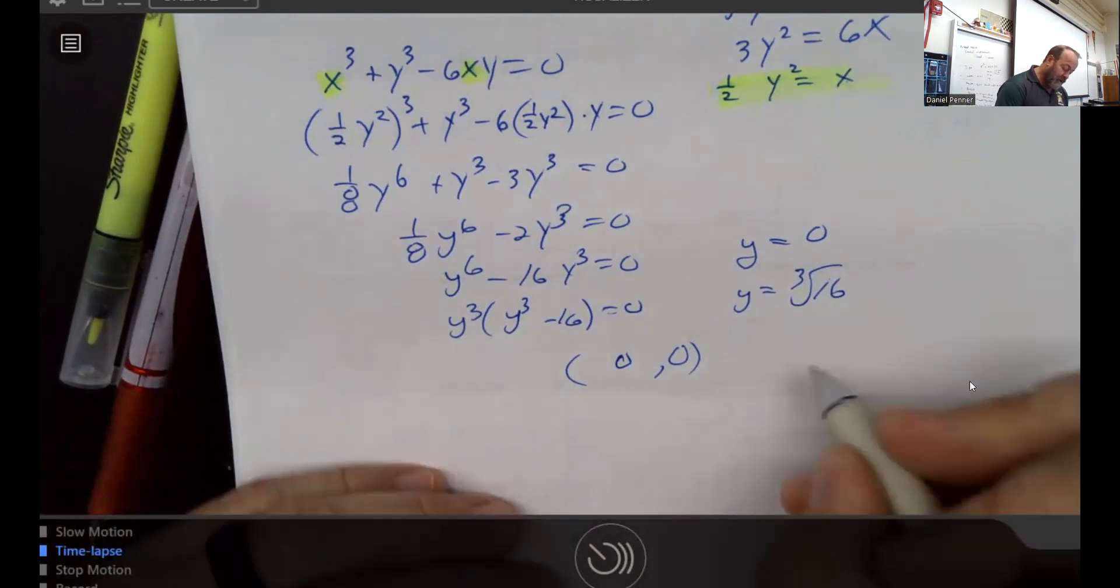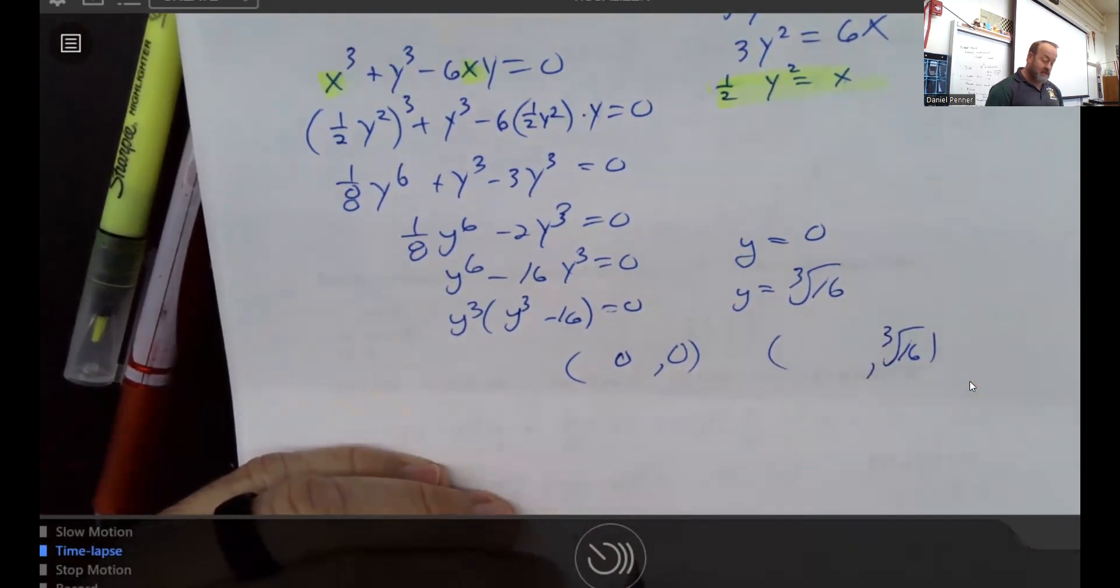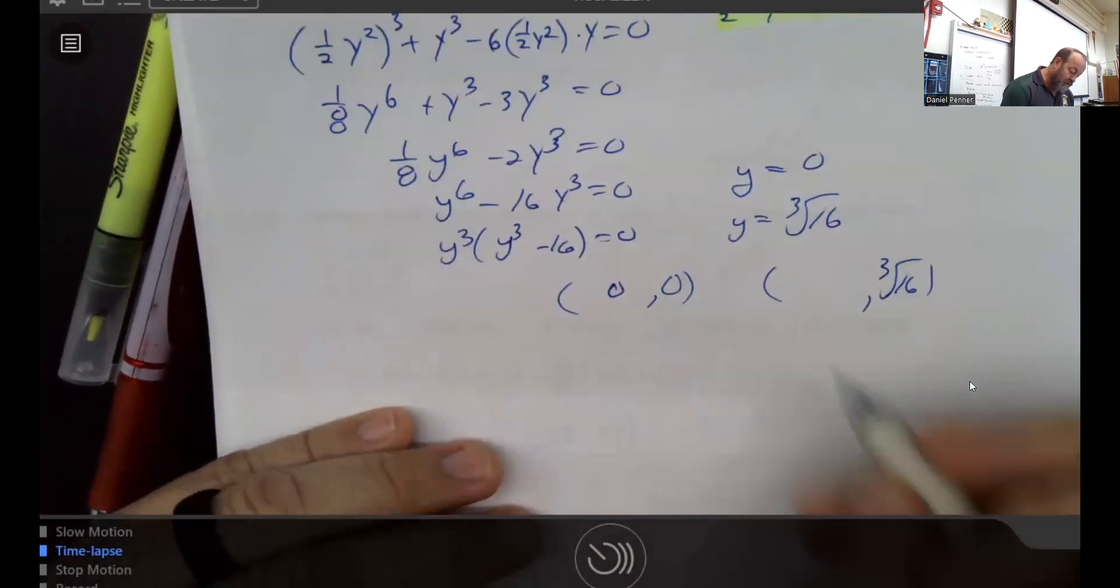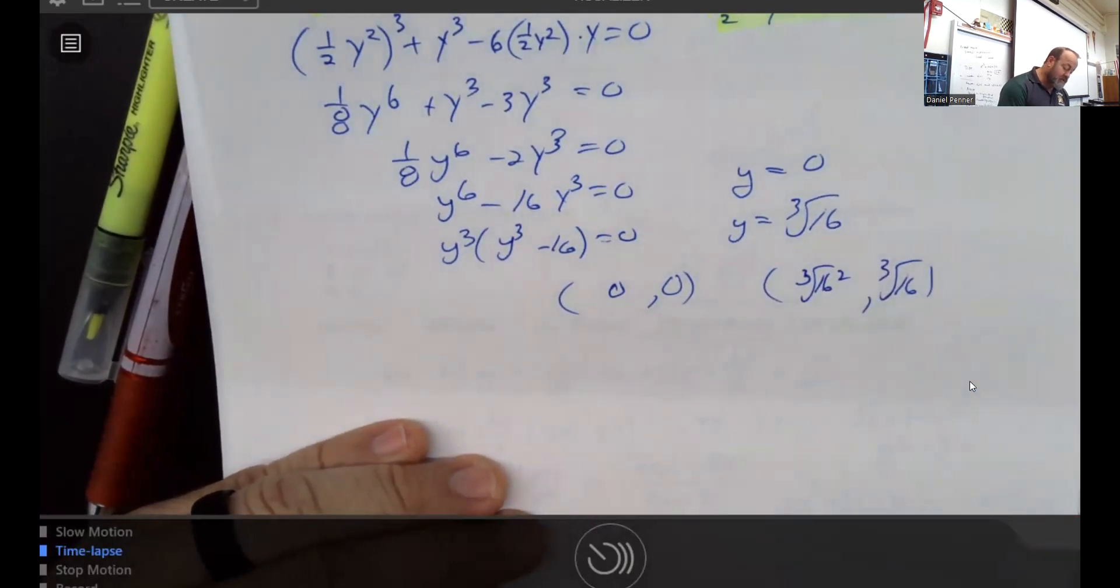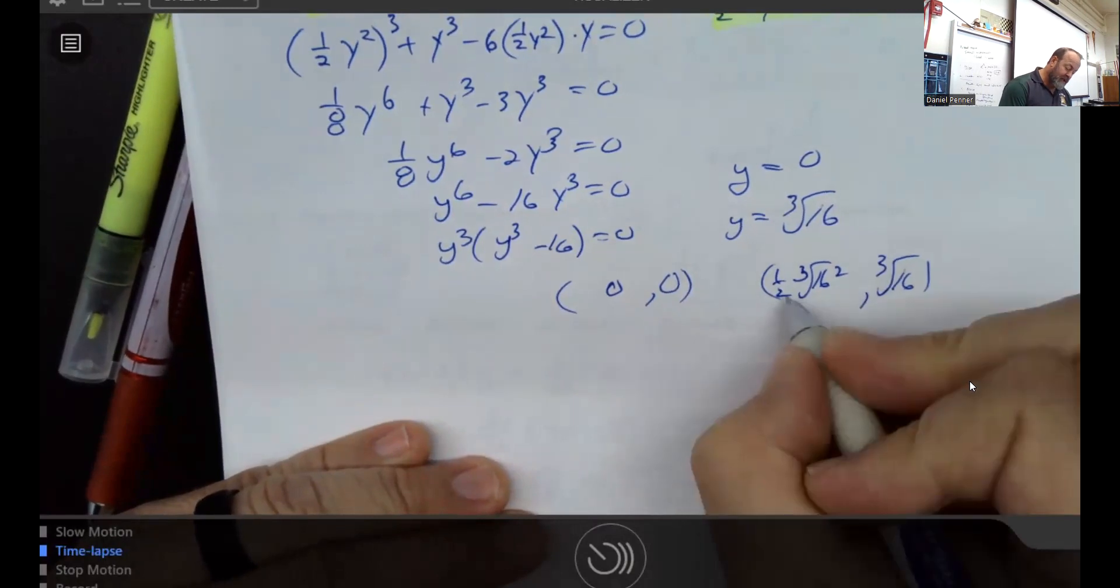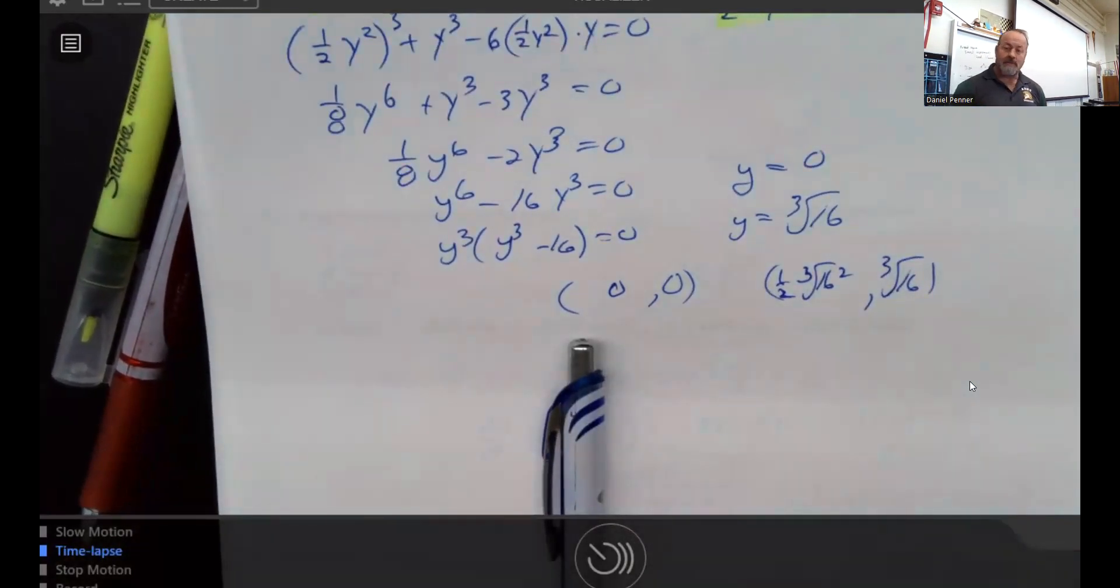But the other one is a little bit harder. If I plug in the cube root of 16 and I square it, then I'm going to get the cube root of 16². And then it says we're supposed to cut that in half. Well, that looks terrible. That doesn't look like that could legitimately be an answer. But let's go ahead and see if it in fact is a legitimate answer.